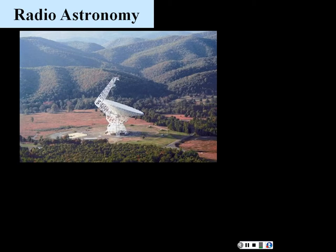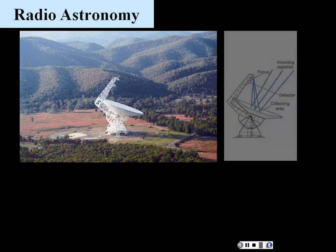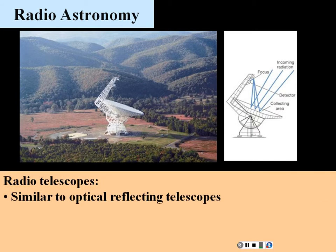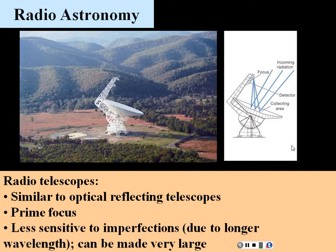Radio astronomy: resolution is not as good as optical, but it does have some advantages. Radio telescopes are similar to optical reflecting telescopes. In this prime focus design, radio waves come in and focus to a point. Radio telescopes are less sensitive to imperfections due to the longer wavelength, and they can be made very large — much larger than optical telescopes — which helps improve resolution to some extent.